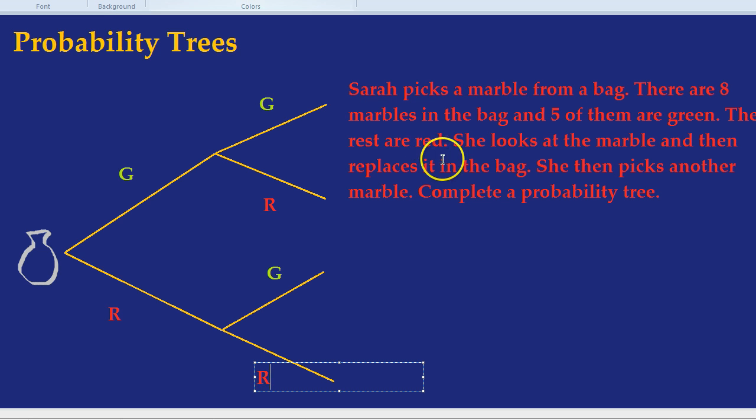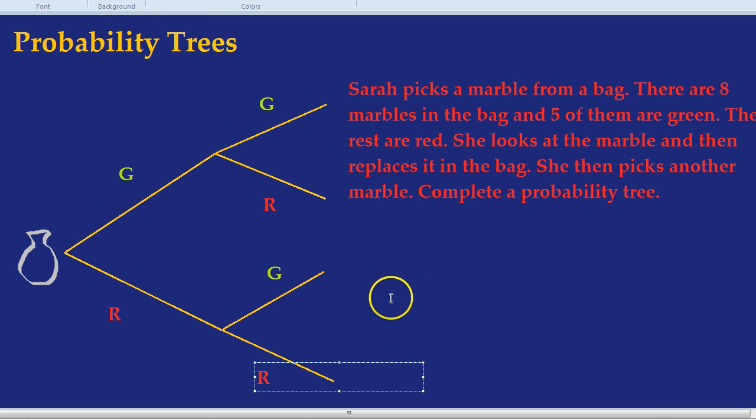Now I'm going to ask a few quick questions about each of the branches. Let's take this branch at the top. What does it represent? It represents the chances of getting a green and then a green.